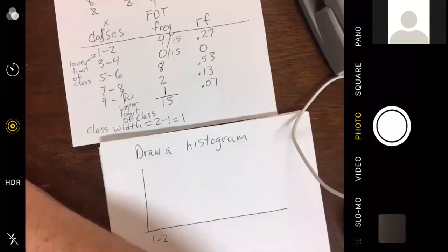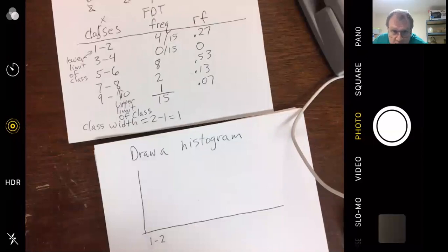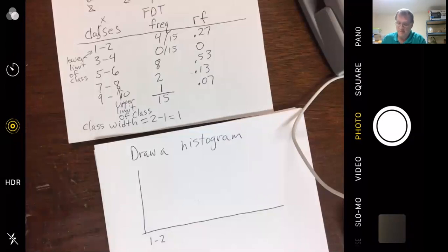I should look at the chat. My mic isn't working right now, but it's wondering if the problem will always specify the class width. No, it won't. In fact, I'll show you problems. Later on in the section, they give you a set of data, and you're allowed to make up your own classes. So I'll just, you know, just point to it.